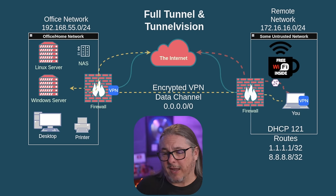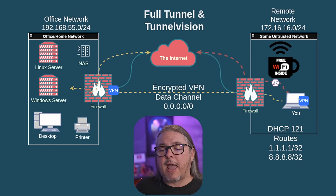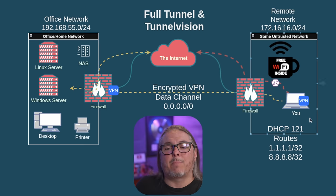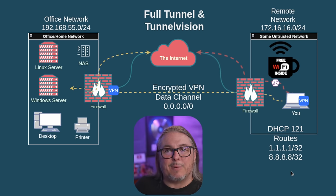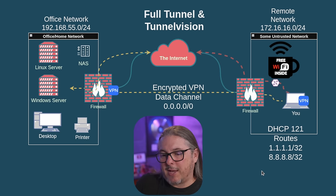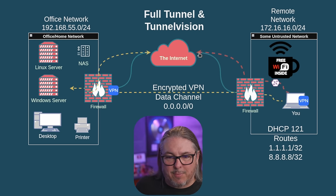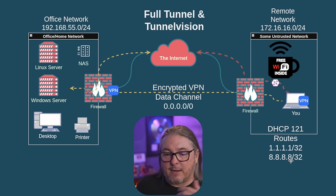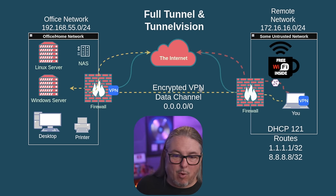Where TunnelVision fits in: it's adding extra routes via DHCP option 121, overriding essentially those routes. So not just adding the 172 route, but adding more — for example, 1.1.1.1 and 8.8.8.8. If those DNS servers are added to your DHCP routes, now those go out over the internet unencrypted. Your system has these extra routes added by DHCP and they're not going out over the encrypted data channel.